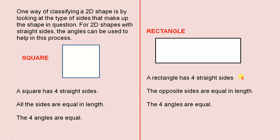The rectangle. A rectangle has 4 straight sides. The opposite sides are equal in length. So in other words, this side here is equal to that one, and that side there is equal to that one. And the 4 angles are equal.